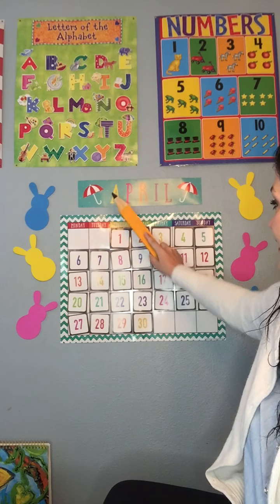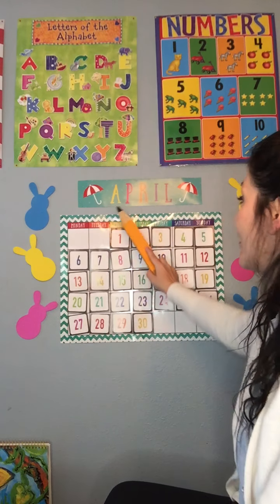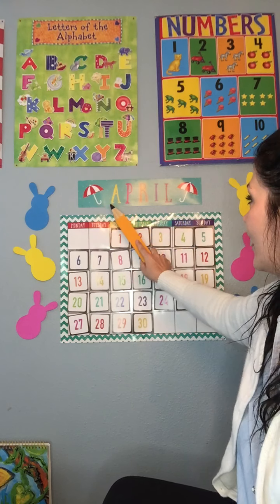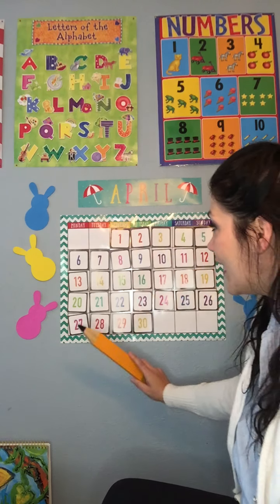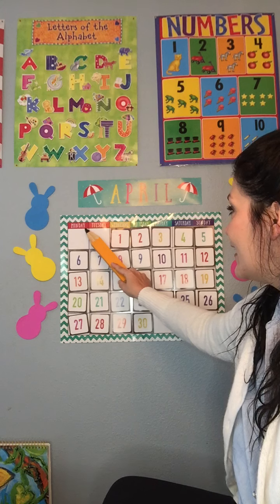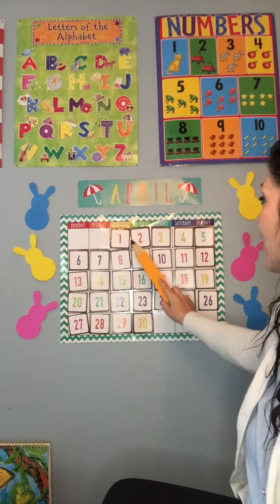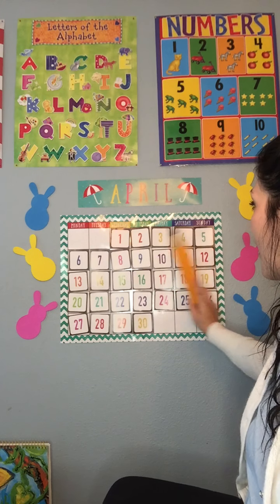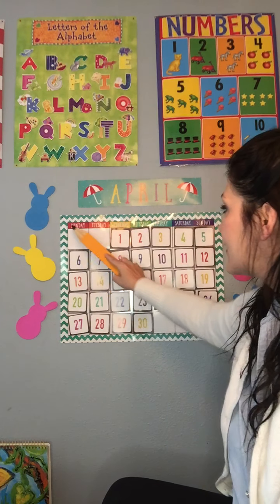The month is still April — A-P-R-I-L. Yesterday was Sunday. Today is Monday. What comes after Monday? You can comment below if you would like. Let's count: one, two, three, four, five, six. It's April 6th and it's Monday.